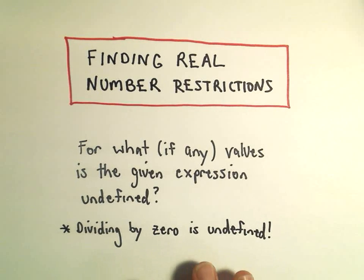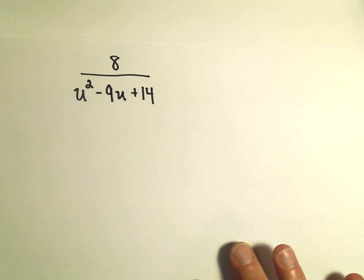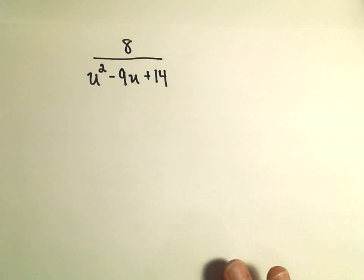The main thing to remember is that dividing by zero produces something that's undefined. In all of our problems that I'm going to do, I'm going to have fractions. So in our first example here, we have 8 over u squared minus 9u plus 14.